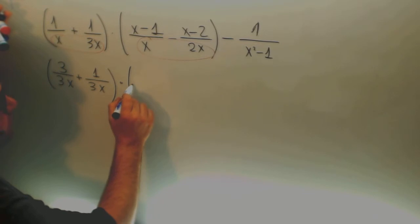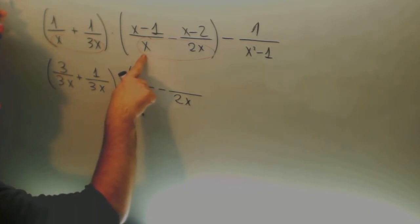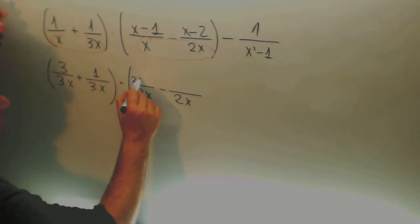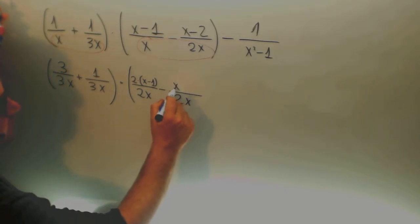The minimum common multiple between x and 2x is 2x. 2x divided by x is 2. So up you have to write 2 by x minus 1. And here it stays the same.